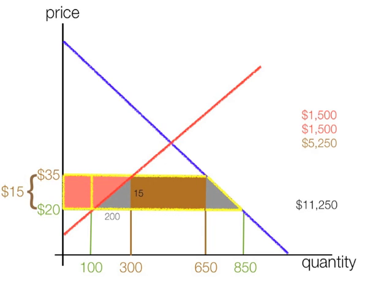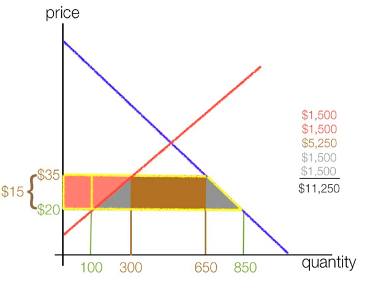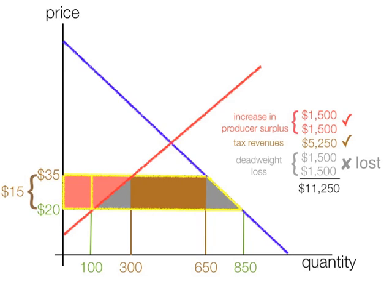Now the gray area is deadweight loss. The first triangle is 200 times 15 times one half, equal to $1,500. The other deadweight loss triangle is the same, and that's another $1,500. So if we add all this up, it should add up to $11,250, which equals the lost consumer surplus. The increase in producer surplus is a transfer from consumer surplus. Tax revenues were also transferred from consumer surplus, but deadweight loss is a loss to society. All this adds up to $11,250 — this is lost consumer surplus because of the tariff.